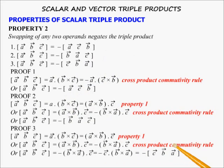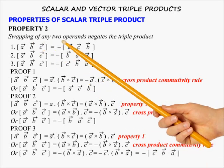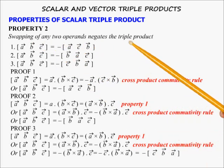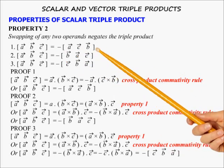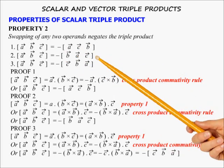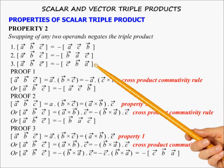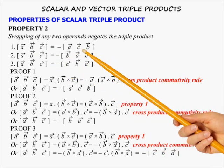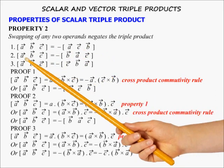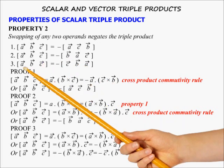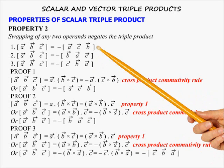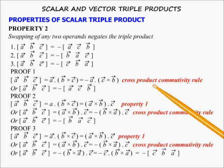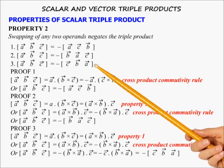Property 2: Swapping any two operands negates the triple product. Thus [ABC] = −[ACB] = −[BAC] = −[CBA]. Here B and C have been interchanged, here A and B have been interchanged, and here A and C have been interchanged. The first case follows from cross product commutativity rules; the next two can be proved by taking the first property into consideration.